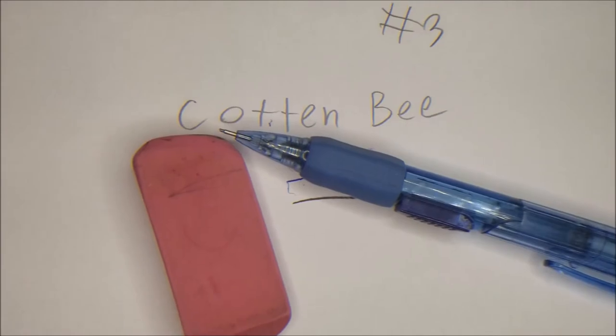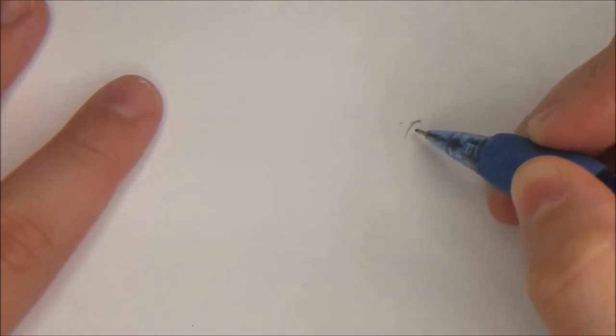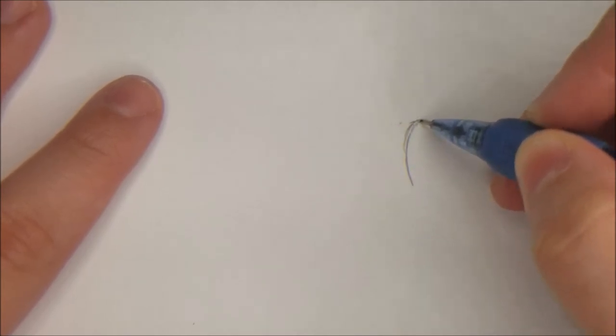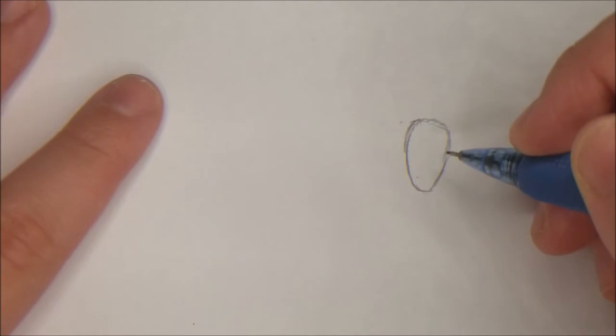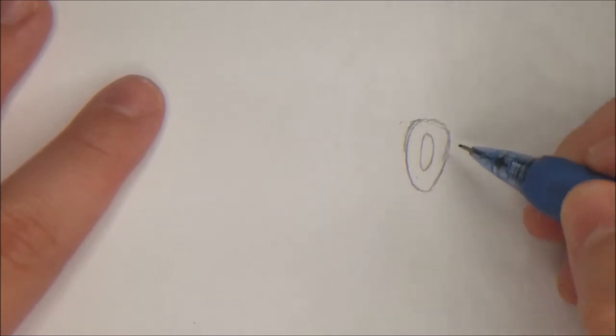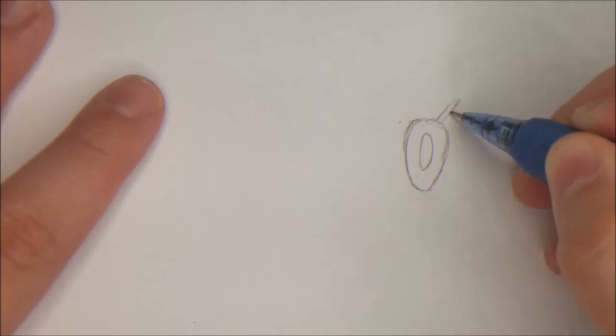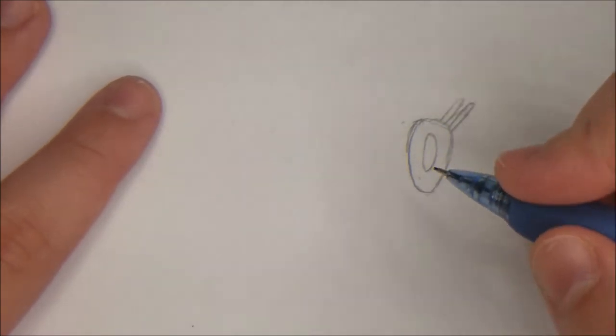Alrighty, let's get started. First, in making our cotton bee, we will want to make its head. So it's going to be kind of like a little weird almond shape. Then inside of that little weird almond shape, it's going to be this half oval. They will also be needing some antennas. So, let's give them some.